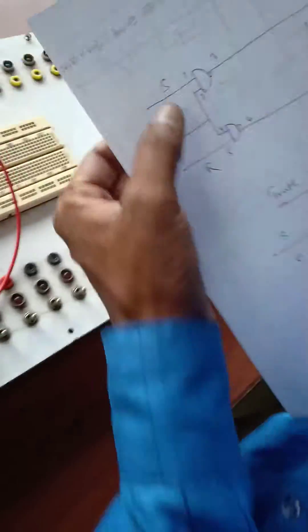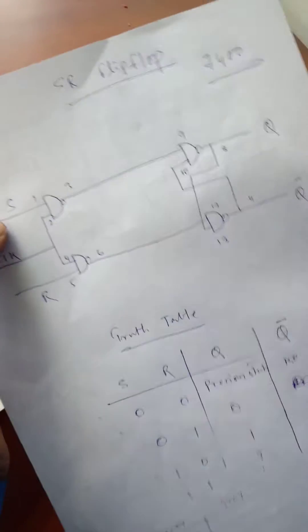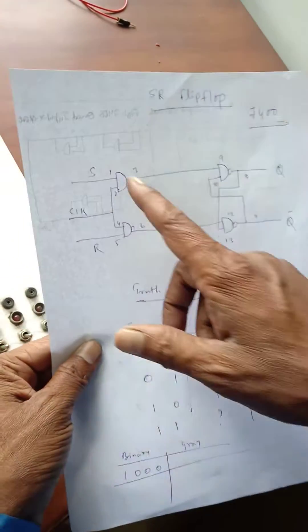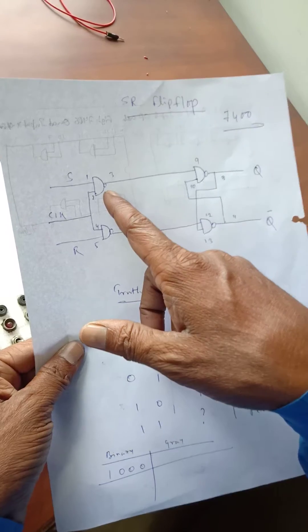So students, we are going to perform the SR flip-flop using NAND gate. This is the circuit diagram of the SR flip-flop. This is the S input, this is the R input, and this is the clock input. And this is the pin number of the gates of the IC.